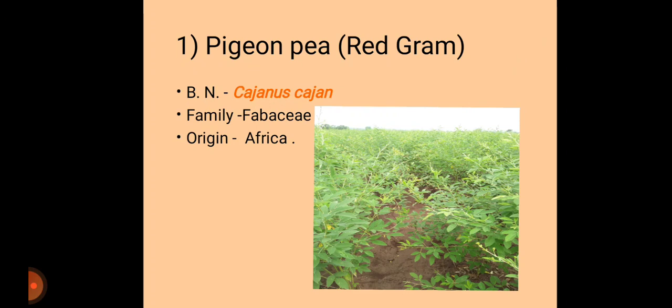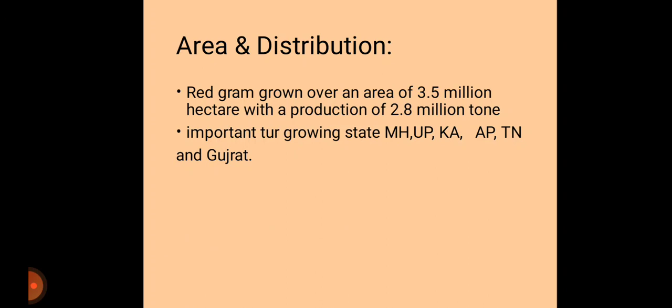Pigeon pea originated from Africa. For area and distribution, red gram or pigeon pea is grown over 3.5 million hectares with a production of 2.8 million tons. Important tur-growing states in India are Maharashtra, Uttar Pradesh, Karnataka, Andhra Pradesh, Tamil Nadu, and Gujarat.